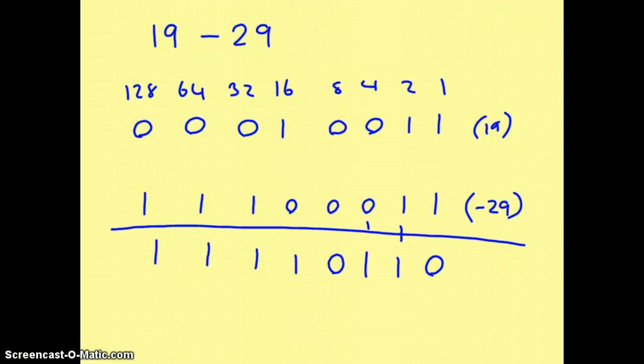Now from the answer, we can determine that this is a negative number because the most significant bit is a 1. Now what we could do, we could write the column headings over the top, so we would end up with 1, 2, 4, 8, 16, 32, 64, minus 128, and we can calculate that way.